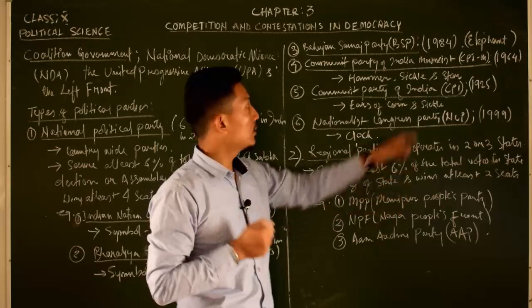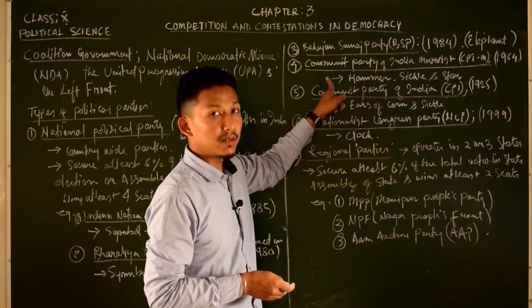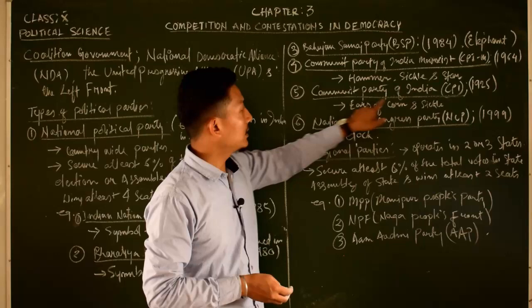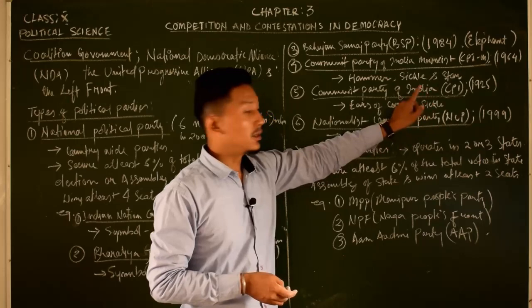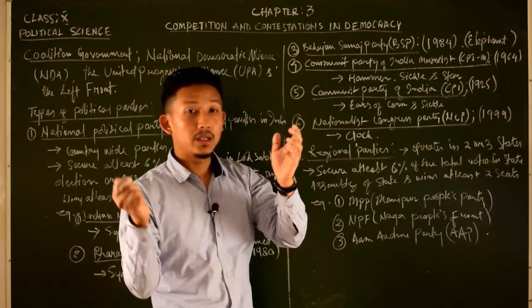The Communist Party of India, CPI, was established in 1925. The last national party example is the Nationalist Congress Party, NCP.